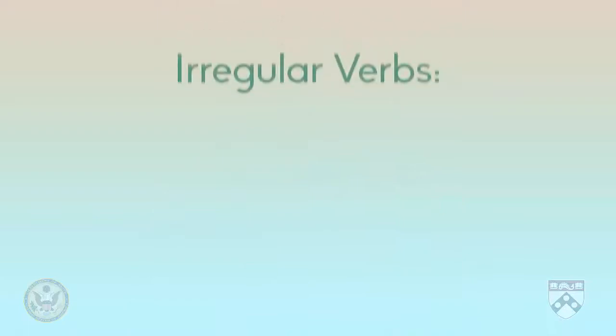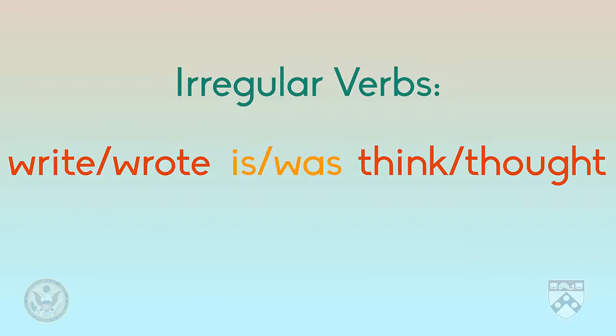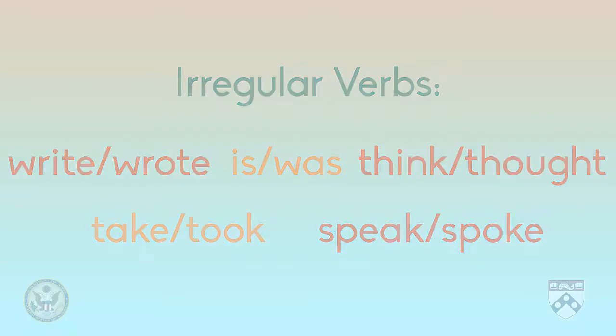There are as many as 400 irregular verbs. It's worth memorizing these forms because many of these verbs are quite common. For example: write/wrote, is/was, think/thought, take/took, or speak/spoke. There's a link in the bonus materials that will help you study the most common irregular past tense verbs.